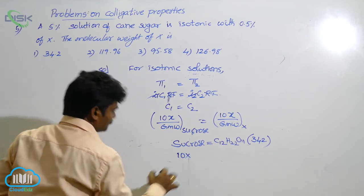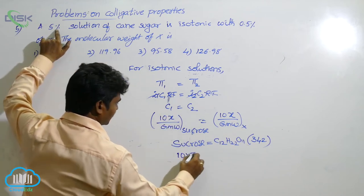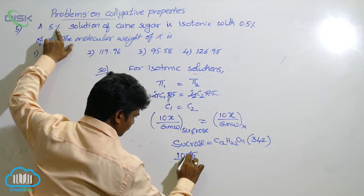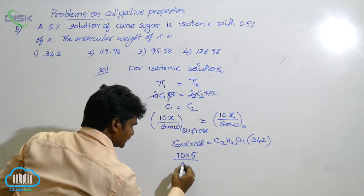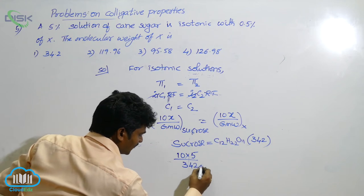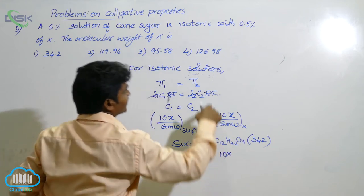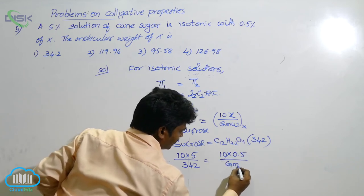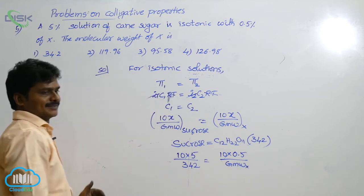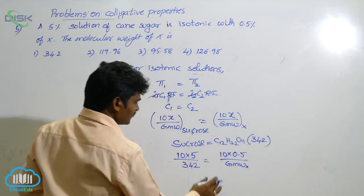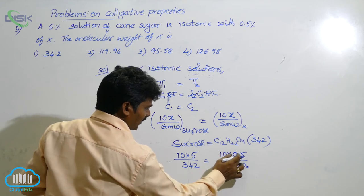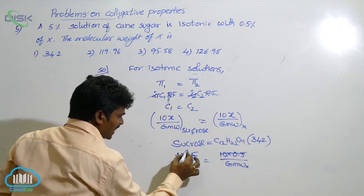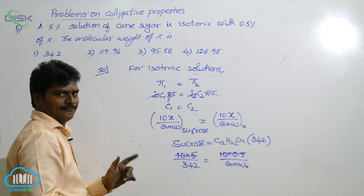10 into what is the percentage of sucrose? 5%. 10 into 5 by its molecular weight of 342. That side 10 into its percentage 0.5 by its gram molecular weight we do not know. Gram molecular weight of X we do not know. So, here what is left over? 10 into 0.5 means 5. It is 50. 5 in 50 how many times? 5 in 50, 10 times.